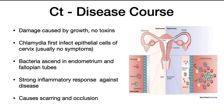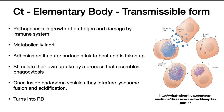Regarding the disease course, damage is caused by growth — this organism does not produce any toxins. Chlamydia will first infect epithelial cells of the cervix. In women, the bacteria spread into the endometrium and fallopian tubes. A strong inflammatory response in the fallopian tubes against the infection causes scarring and occlusion, which leads to sterility. The pathogenesis is therefore driven by growth of the pathogen, and the damage is caused by the immune response's reaction to that growth.